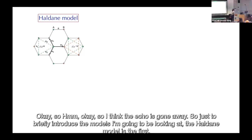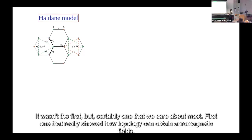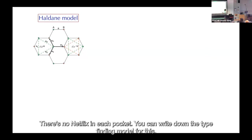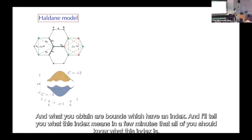To briefly introduce the models: the Haldane model was certainly one of the first that really showed how topology can obtain without an outer magnetic field. You have these chiral next-nearest-neighbor hoppings with opposite phases and no net flux in each plaquette. You can write down the tight-binding model and obtain bands which have a Chern number index.